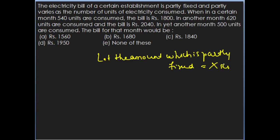So the total bill equation for 540 units is: X plus 540Y equals 1800. Similarly, for another month where 620 units are consumed, the total amount is: X plus 620Y equals 2040. This forms a system of linear equations.